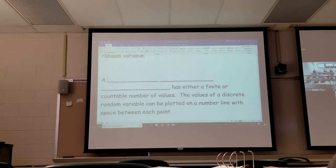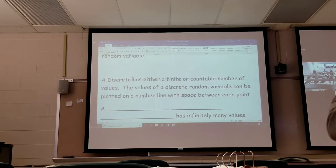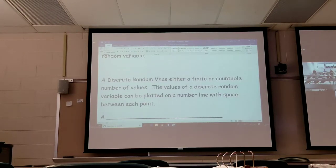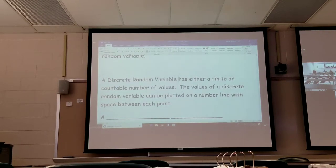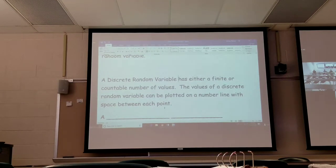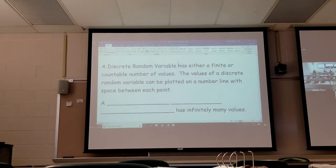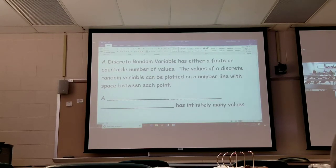A discrete random variable has either a finite or countable number of values. The values of the discrete random variable can be plotted on a number line. There's a way to look at them and tell what it is without actually using the definition. If you're looking at whole numbers, it's discrete.